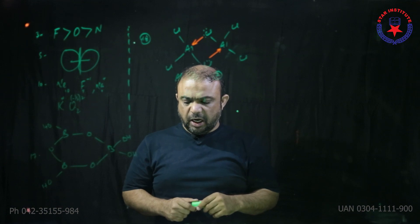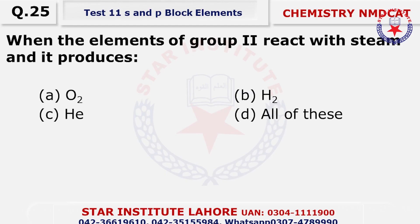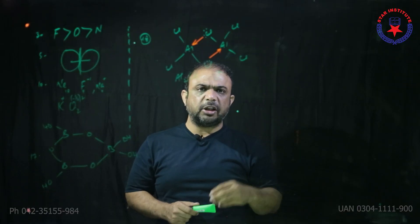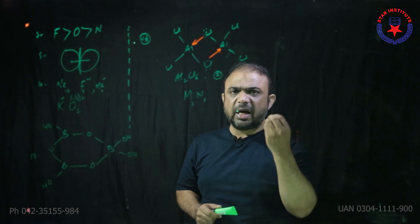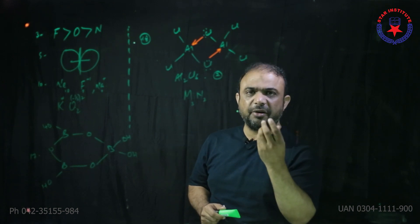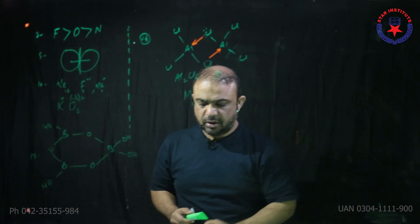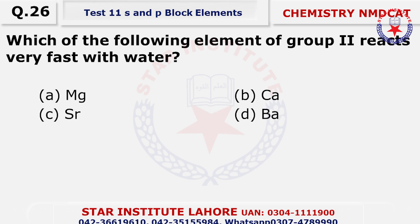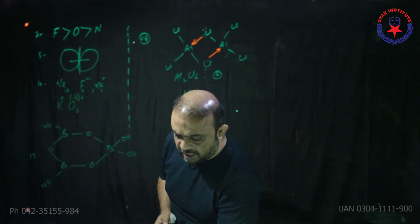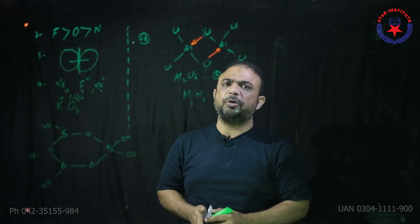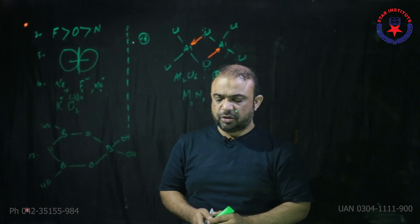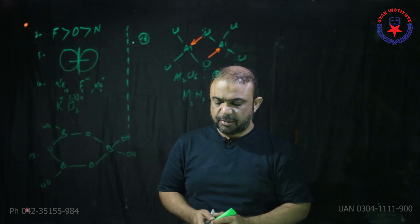Question number 25: When elements of group 2 react with steam, the gas produced is hydrogen. Question number 26: Which element of group 2 reacts very fast with water? Options are magnesium, calcium, strontium, or barium. Reactivity increases top to bottom, so the choice is D — barium.